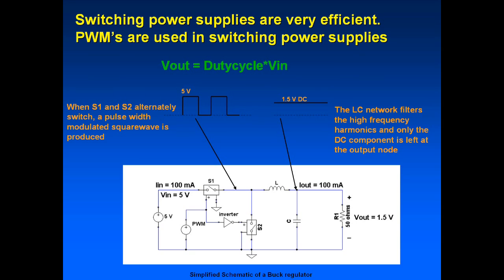Switching power supplies are very efficient because they use the technique of modulating the width of a pulse. By regulating this width, you can shorten or increase the time it's on. It switches at the same frequency — the leading edge does not change. What changes is the negative going, or trailing, edge. The trailing edge moves to give a low or high duty cycle.